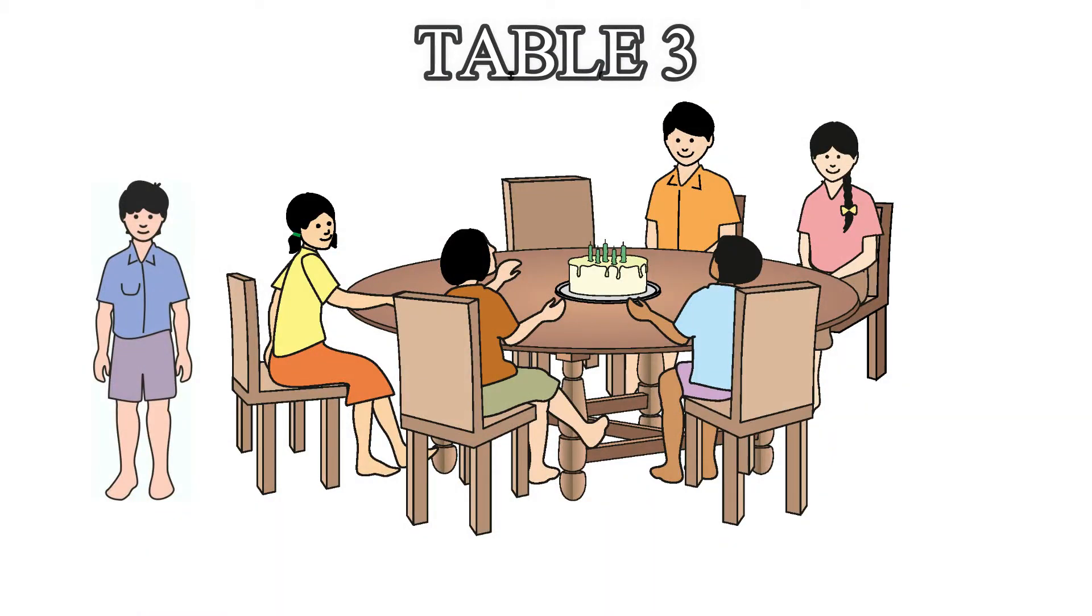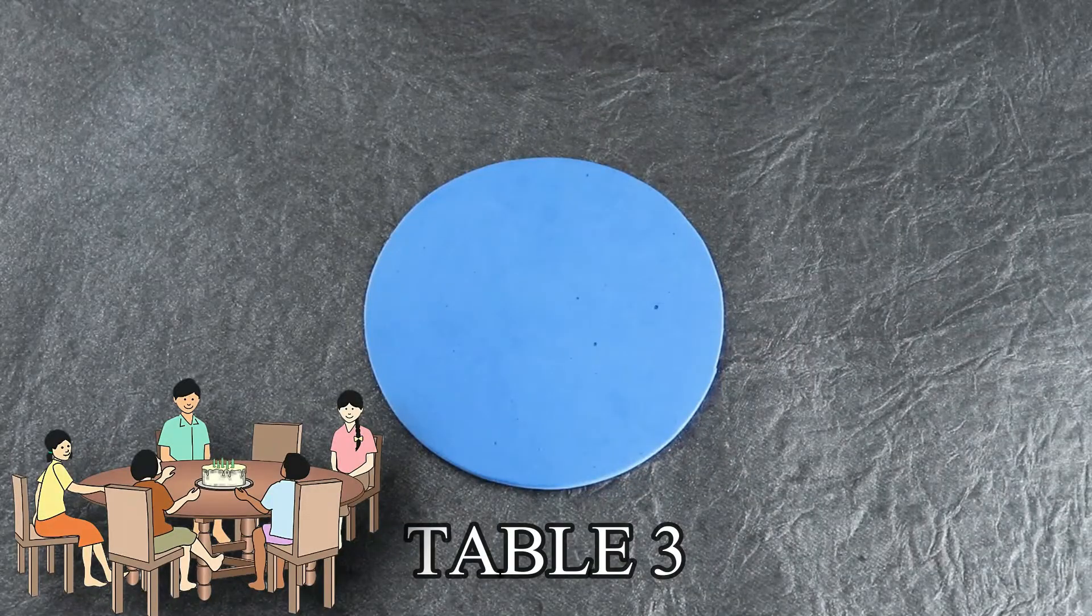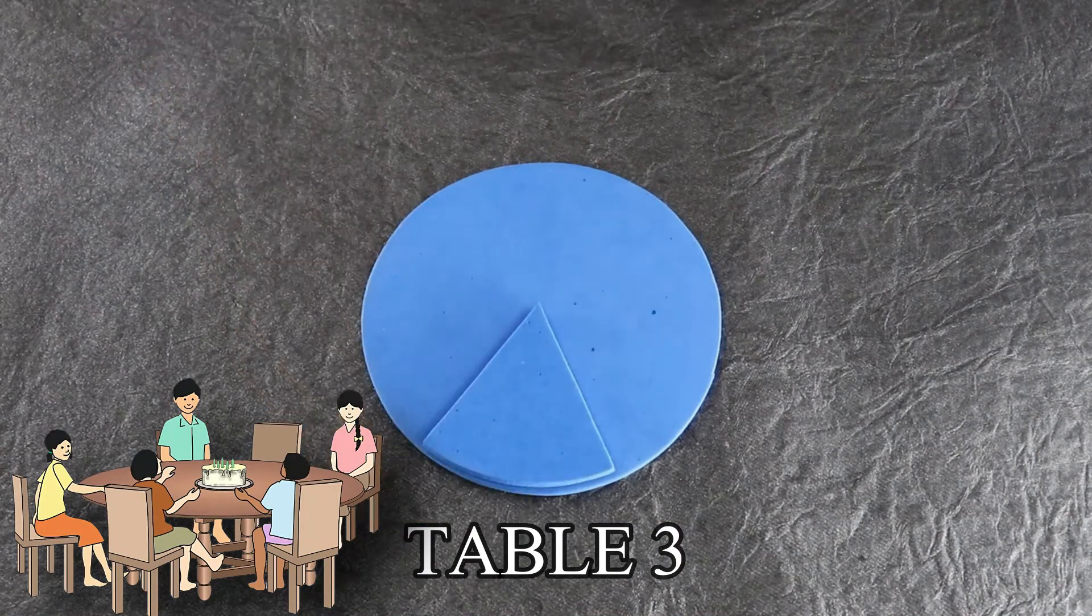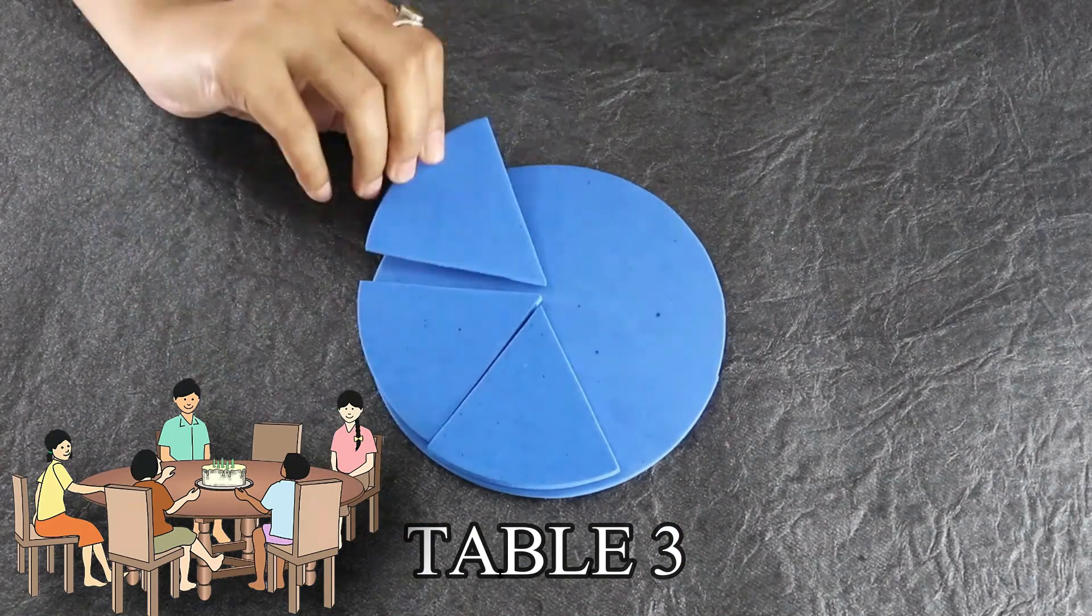At table 3, there are five friends and Arun will be the sixth one. Arun thinks that the cake will be divided into six parts if he goes to table 3.